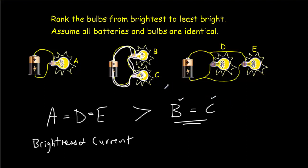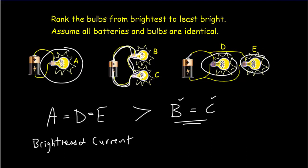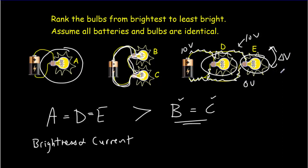We need the idea of voltage or electric potential difference to understand which bulbs are brightest. The first bulb has the full voltage of the battery across it. These two parallel bulbs also each have the full voltage across them. If this is a 10-volt battery, all the wire at the top is at 10 volts and all the wire at the bottom is at 0 volts, so both parallel bulbs get 10 volts across them. In the series case, the voltage splits — say 5 volts across the first bulb and 5 volts across the second — which drives less current through those bulbs.